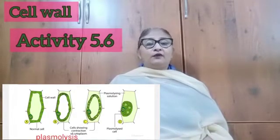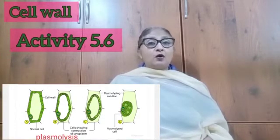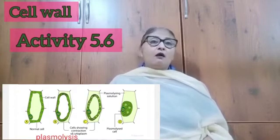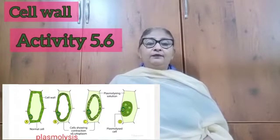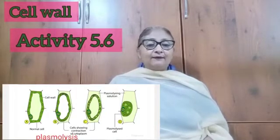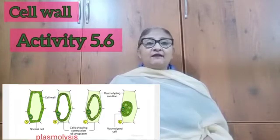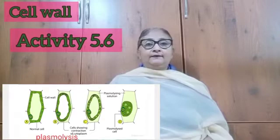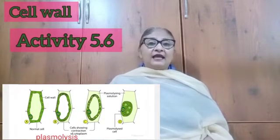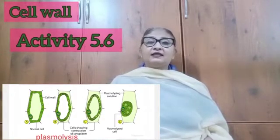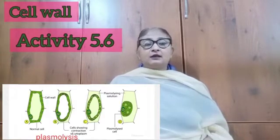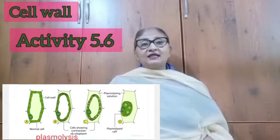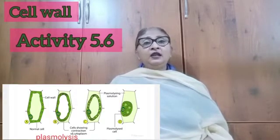Next, we need to remove the cover slip and pour a few drops of concentrated sugar or salt solution. Keep it for some time, that means 4 to 5 minutes, and then replace the cover slip and view it through the microscope. Now we will see that the content of the cell has shrunk away from the cell wall. This proves that plasmolysis has occurred.